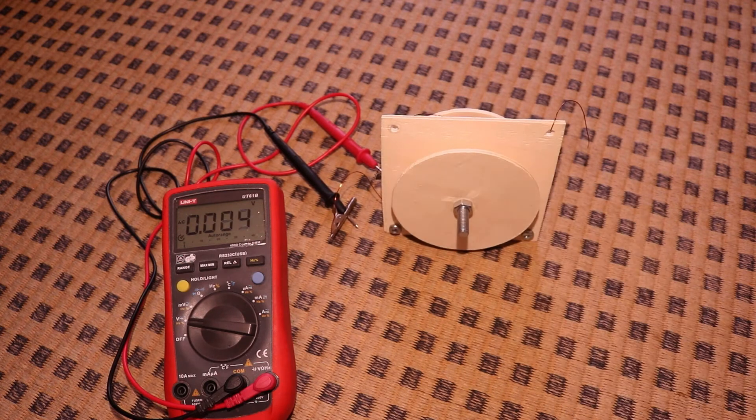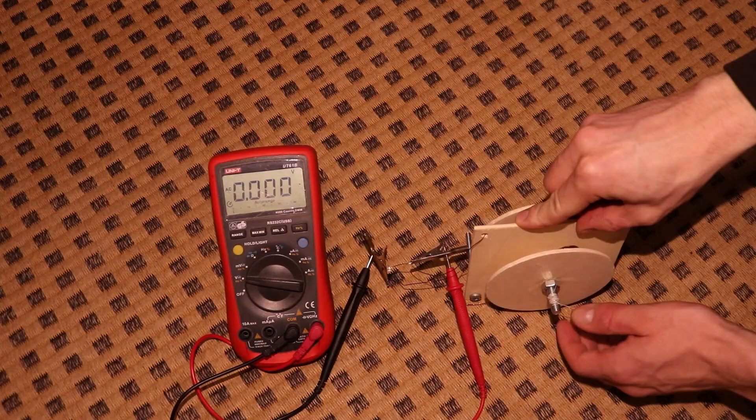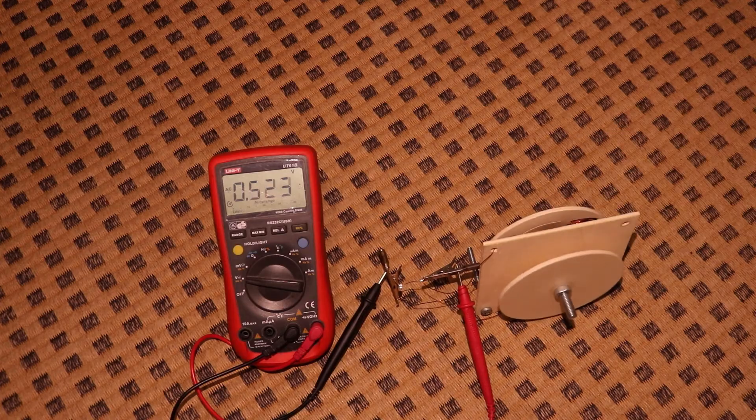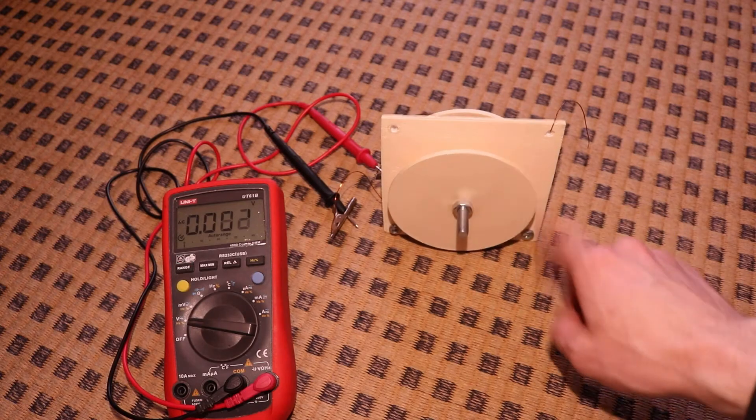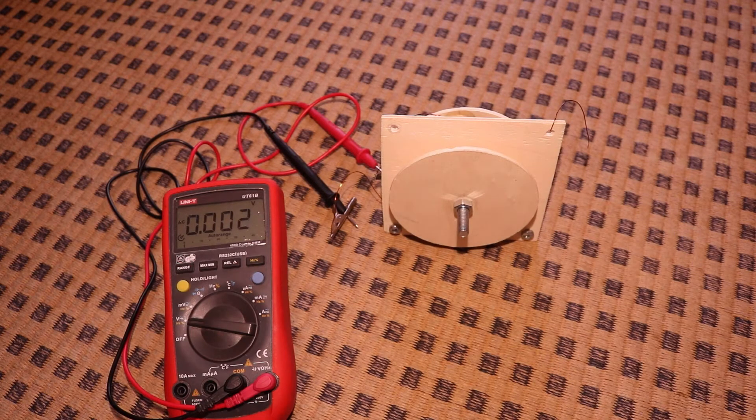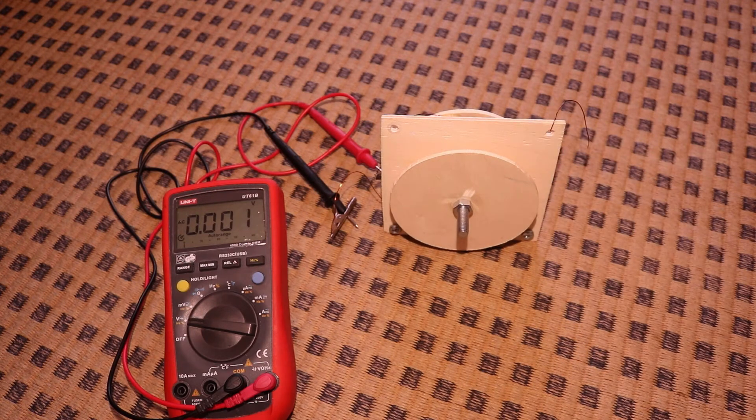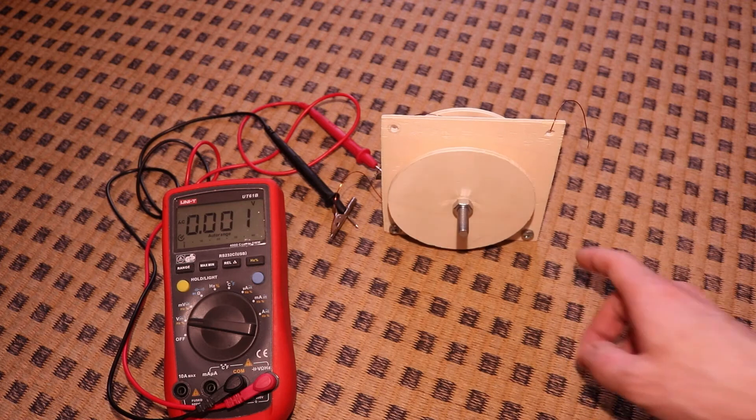If I make this faster it can produce like 1.6 volts, around that, but not really more. I don't want to spin it up super fast because it's made of wood, and I actually had a magnet flying away when I was spinning it faster.